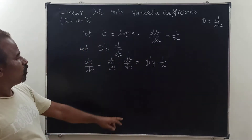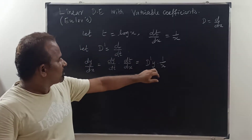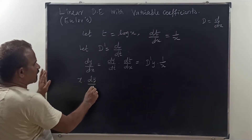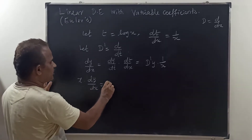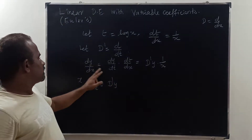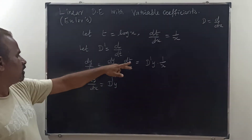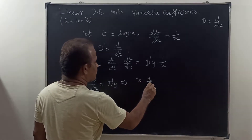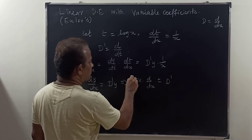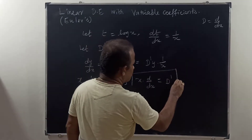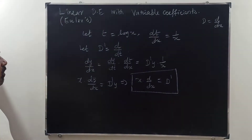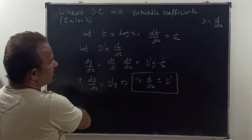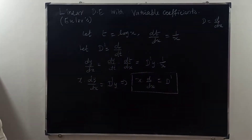Now, d/dx equals d/dt times dt/dx. Since D' equals d/dt and dt/dx equals 1/x, we get D' times (1/x). Therefore, x times dy/dx equals D'y. This is most important.